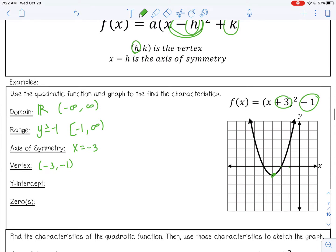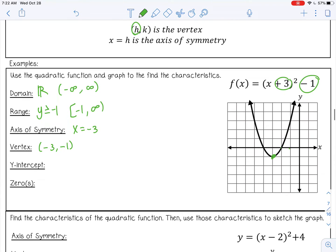My y-intercept, I can't tell where it is from the graph, so I'm going to substitute in 0 for x to see where it actually is. That's 3 squared minus 1. That's 9 minus 1, so 8. So it's up here somewhere.